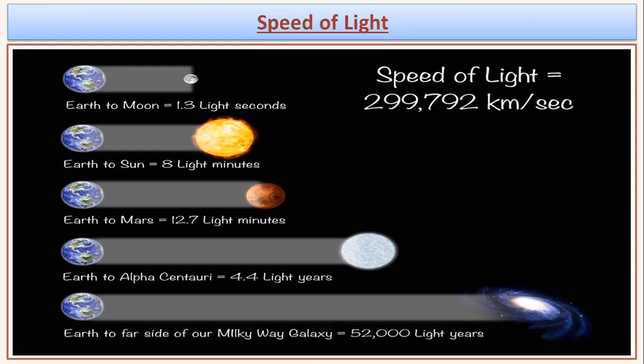Now I want to discuss about a term called light year. A light year is a unit which we use to measure the distance between two heavenly bodies. It is the distance traveled by light in a whole year. For example, the distance between the earth and the sun can be said to be eight light minutes.